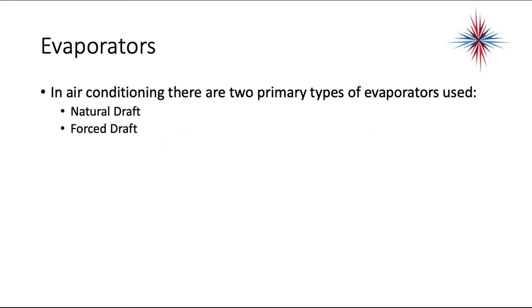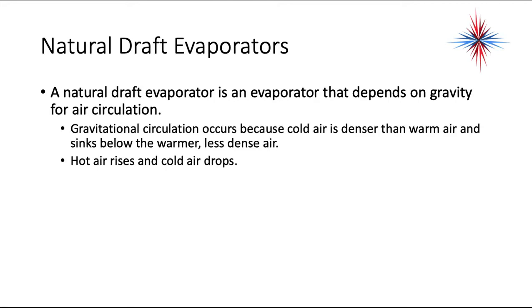There are two primary types of evaporators used in air conditioning: natural draft and force draft. Natural draft, as you'll see in the next picture, you see a lot of times in big warehouses. They're not often used in conditioned space other than big cold storage warehouses, and they could almost be considered refrigeration. Natural draft evaporators depend on gravity for air circulation. Gravitational circulation occurs because cold air is denser than warm air and sinks below the warmer, less dense air — hot air rises and cold air drops.